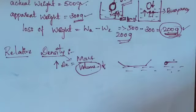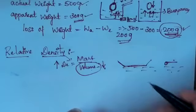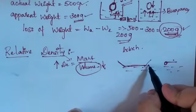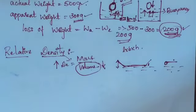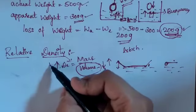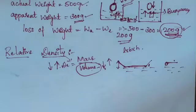A boat has a large volume — length times breadth times height — so its density is less. If the density of a substance is less than the density of water, it floats. If the density of a substance is more than the density of water, it sinks.